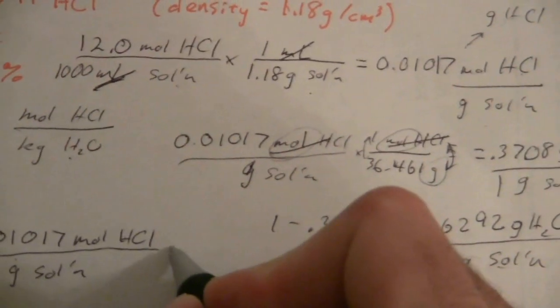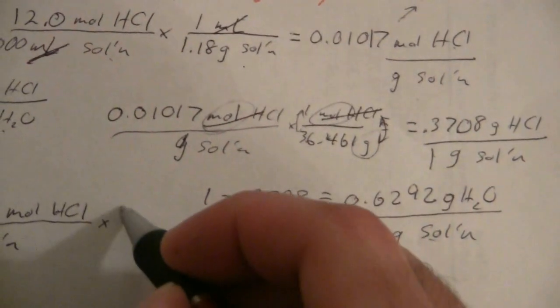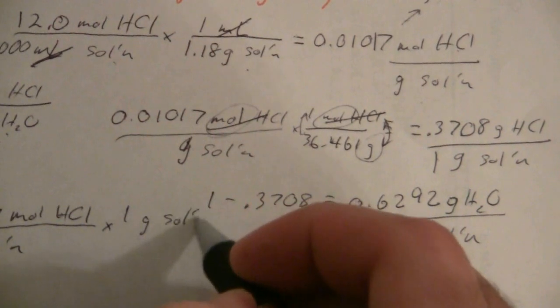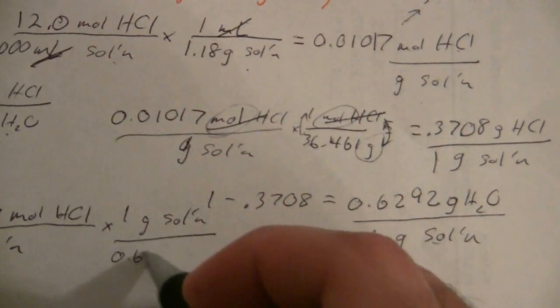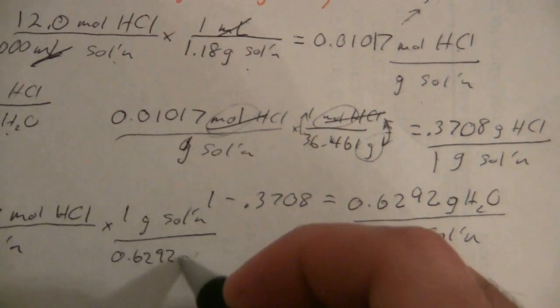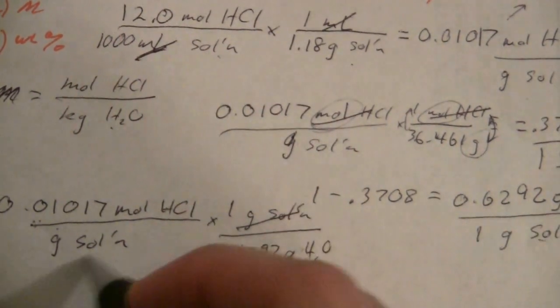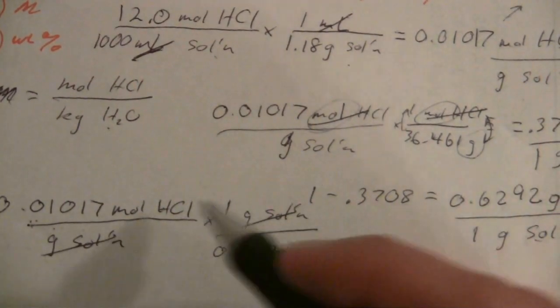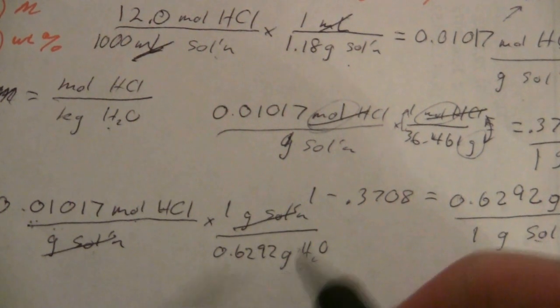And then what I found here is that in one gram of the solution, I have 0.6292 grams of water. And I arranged it properly this time so that now I'll have moles per gram of water.